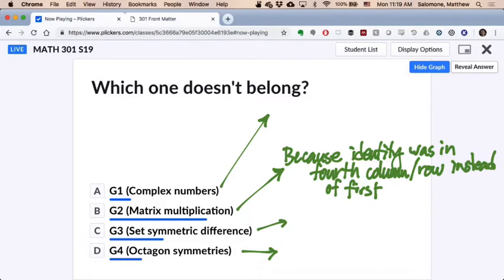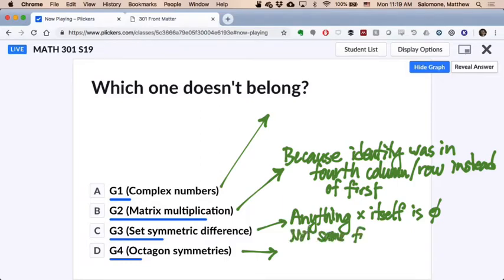All right. So how about C? What makes the set symmetric difference the one that doesn't belong? Grace? If you multiply anything by itself, it results in an empty set of the same thing. So anything times itself, let me make sure I get this right. Anything times itself is the empty set. And then that's not the same for the others. Okay.